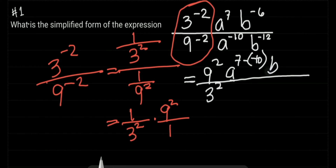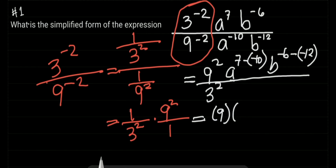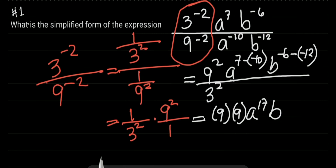Then a to the power of 7 minus negative 10, times b to the power of negative 6 minus negative 12. We can rewrite this as 9 times 9, then a to the power of 7 plus 10, which is 17. For b, negative 6 minus negative 12 becomes positive 12, so the exponent is negative 6 plus 12.